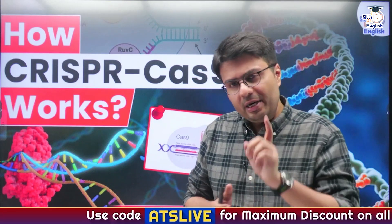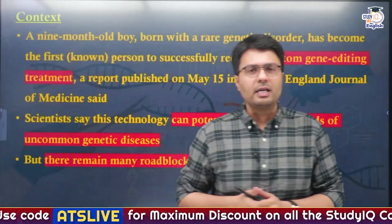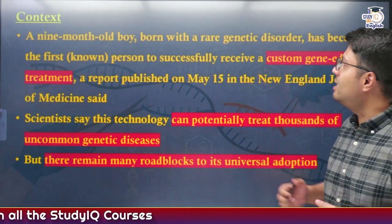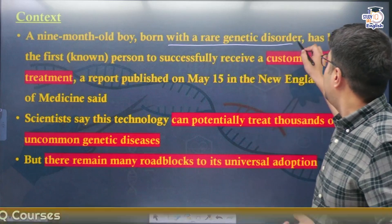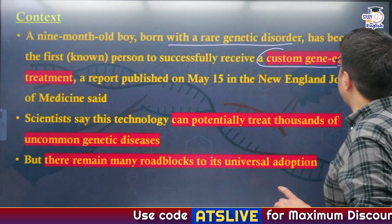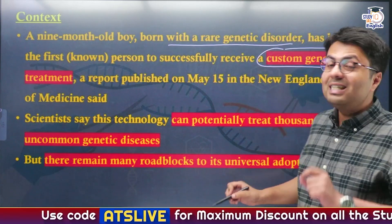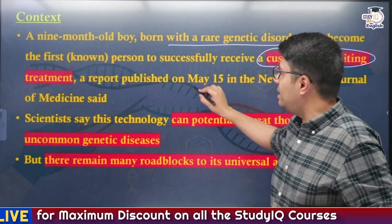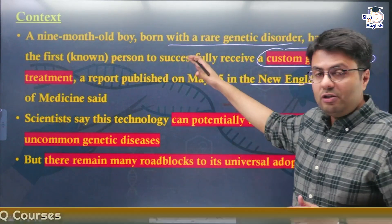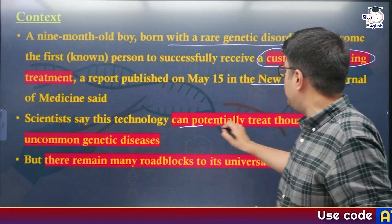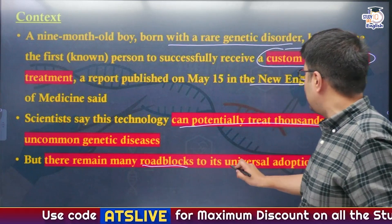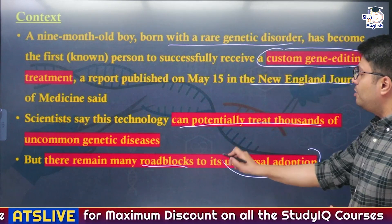Why are we discussing genetic editing today? A 9-month-old boy in the United States who was born with a rare genetic disorder has become the first known person to have successfully received a custom gene editing treatment known as base editing, and this information was updated in a journal called the New England Journal of Medicine. Scientists say that this technology known as base editing can potentially treat thousands of uncommon genetic diseases, but there are certain roadblocks that might pose challenges to its universal adoption.